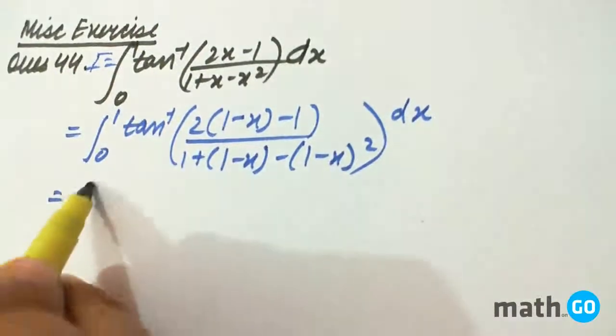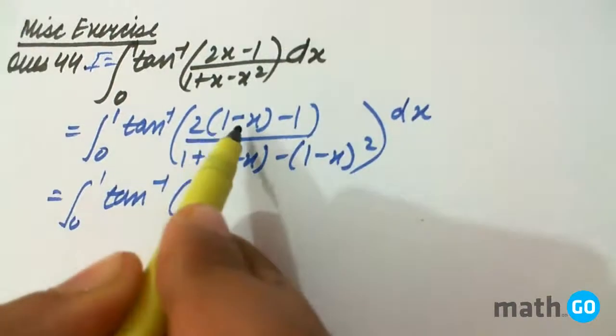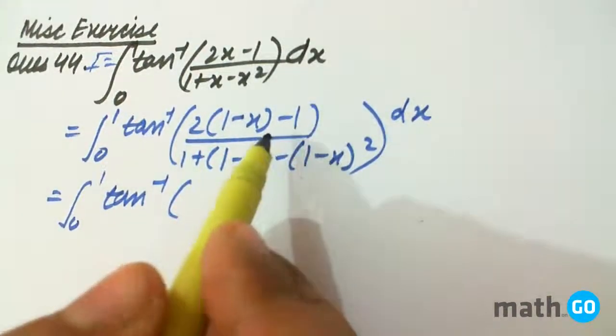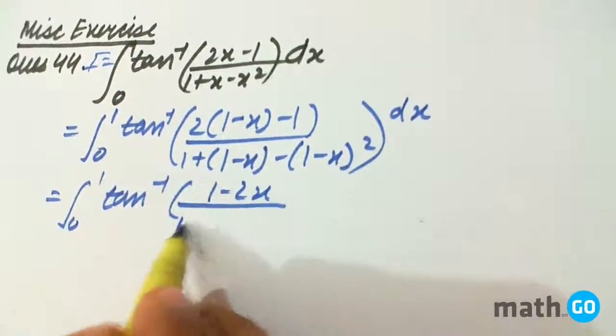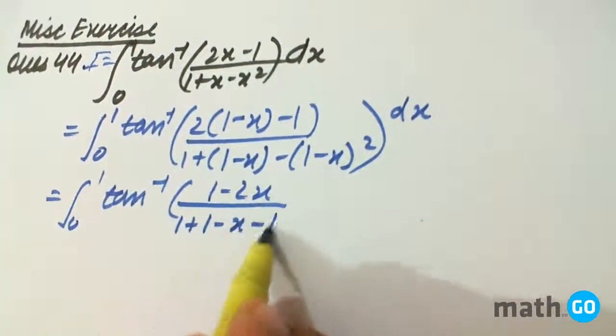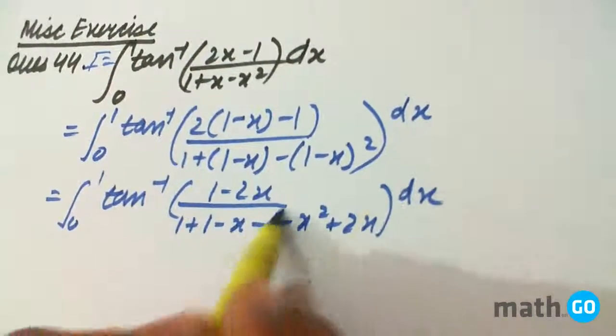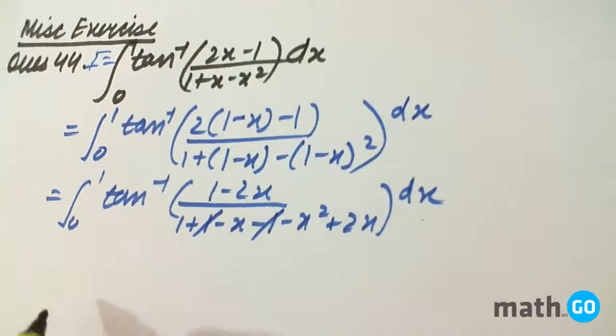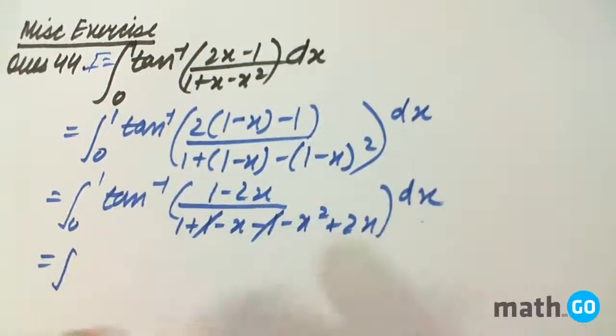...of 2-2x-1, so it will convert into (1-2x)/(1+(1-x)-(1-x)²+2x) dx. This gets cancelled and this becomes x, so it is 0 to 1 tan inverse (1-2x)/(1+x-x²+2x) dx.